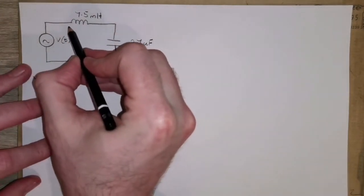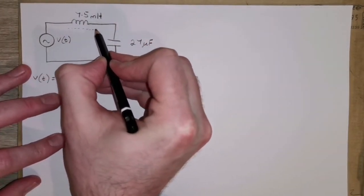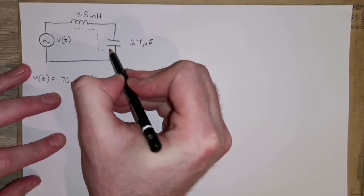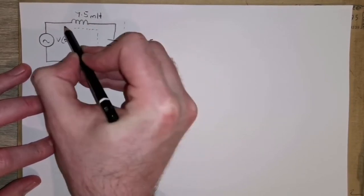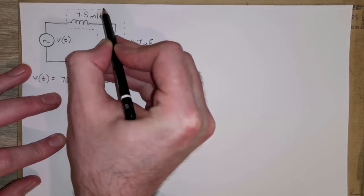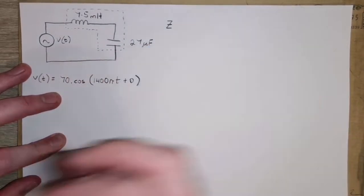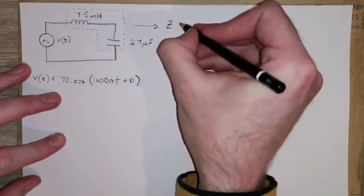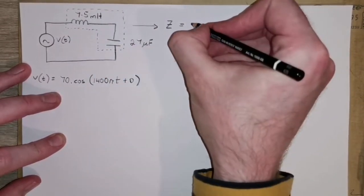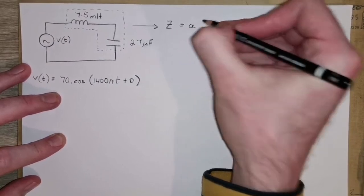So what this is really asking us is, for this entire impedance connected to the source, if we're representing this in complex numbers, the overall impedance is going to be made up of some real part, we'll call it A, and some reactive part, size B.